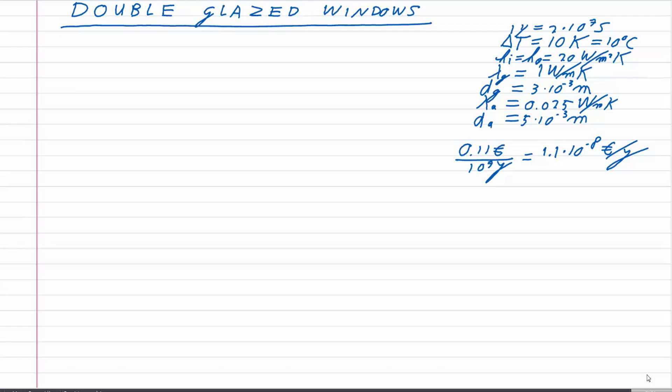I always start by writing down the data from the question. One year equals 2×10⁷ heating seconds, and the temperature difference between the inside and outside of the glass is always 10 Kelvin on average. The exterior heat transfer coefficients on the inside and outside of the glass are equal at 20 W/m²K, the conductivity of glass is 1 W/mK, and the thickness of a single glass pane is 3 millimeters.